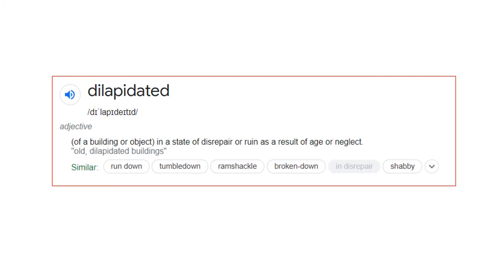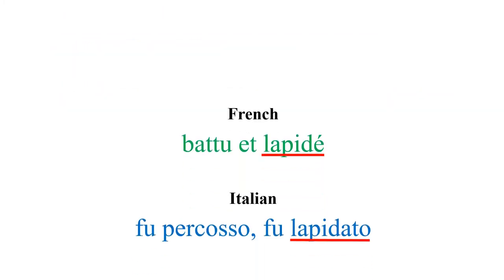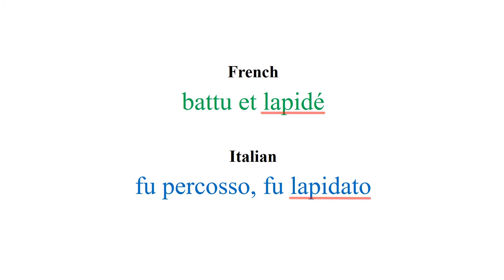Let's go back to the words we're still trying to understand in Italian and French. We have 'lapide' in French and 'lapidato' in Italian. We've also just seen that the English word 'dilapidated' refers to a building that is in a state of ruin — a building that is in a state of ruin.